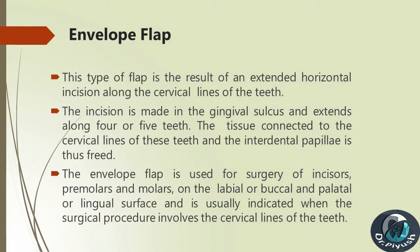Envelope Flap: This type of flap is the result of an extended horizontal incision along the cervical lines of the teeth. The incision is made in the gingival sulcus and extends along four or five teeth, freeing the tissue connected to the cervical lines and the interdental papillae. The envelope flap is used for surgery of incisors, premolars, and molars on the labial, buccal, palatal, or lingual surface, and is usually indicated when the surgical procedure involves the cervical lines of the teeth.